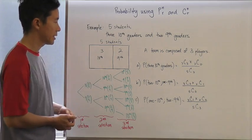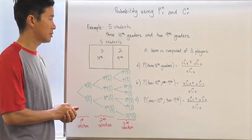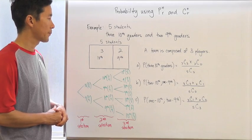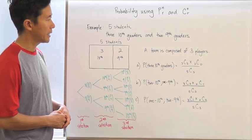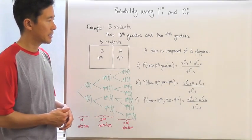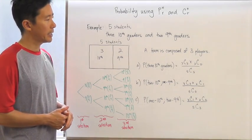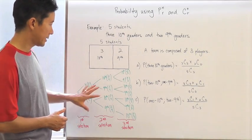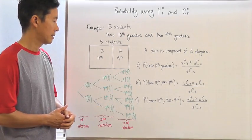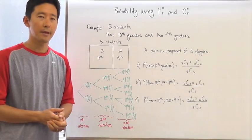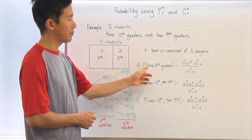To calculate the probability of getting three tenth graders using the tree, I would just multiply those values together to come up with the total probability. However, once we look at the same problem using combinatorics, we can make the tree diagram unnecessary.